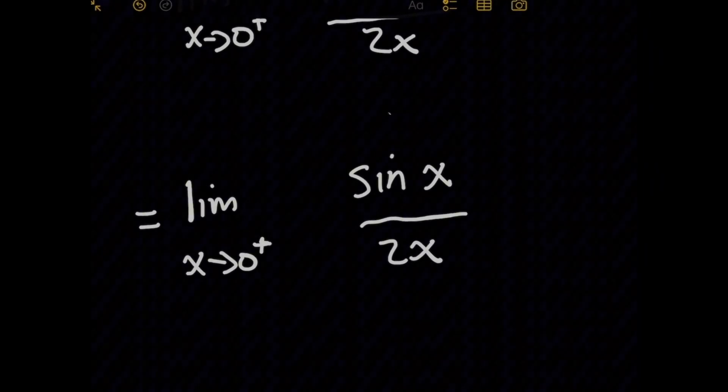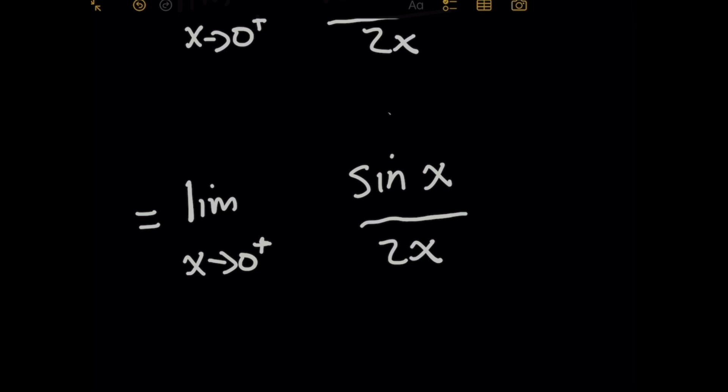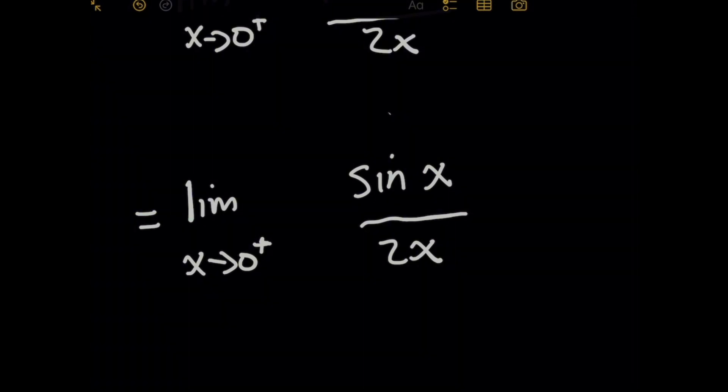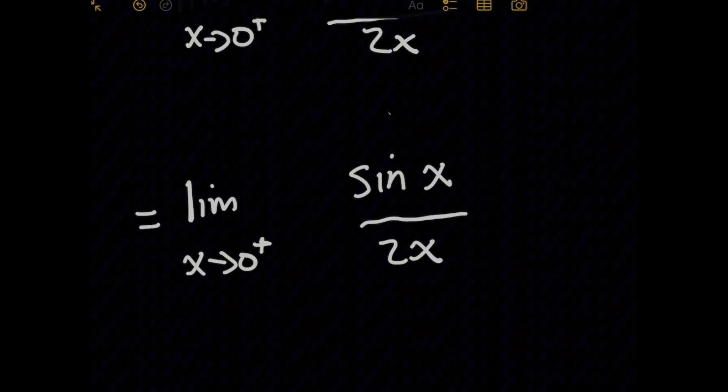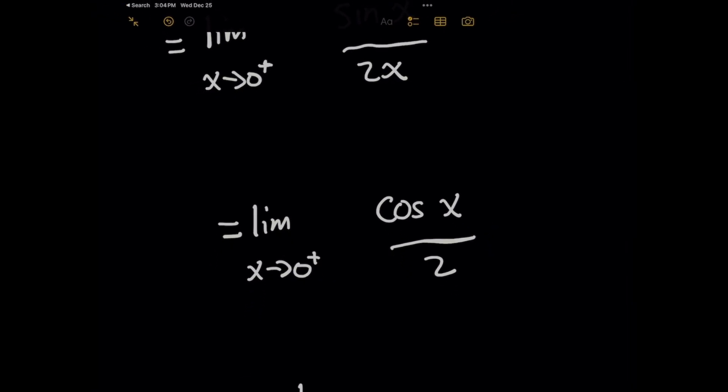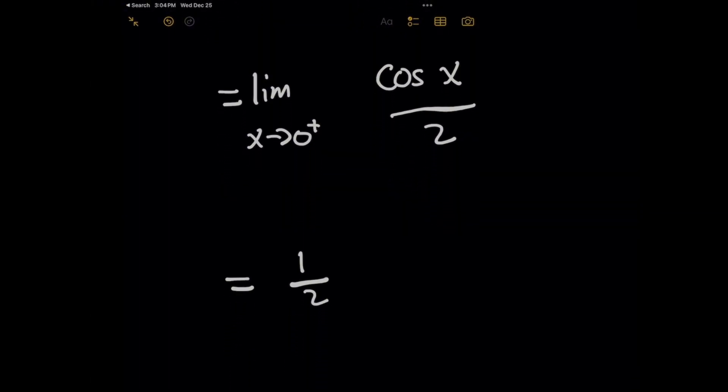So for this, I'm going to go ahead and just drop the absolute value sign. And this is really easy to work with now because I can just use L'Hopital's rule here. If you don't remember, all you do is you take the derivative of the top and then the derivative of the bottom, giving us the limit as x approaches zero from the right of cosine of x over 2. And check this out, I can just plug in zero right now, because I'm not dividing by zero. And that's going to give me an output of one half.